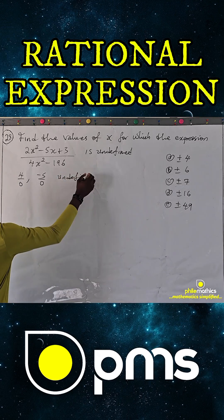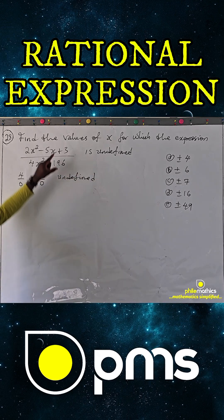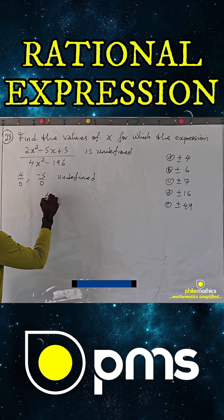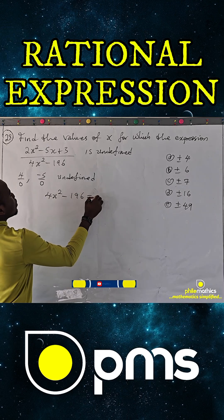And so, to find where this is undefined is to equate the denominator to 0. So, 4x squared minus 196 equals 0.